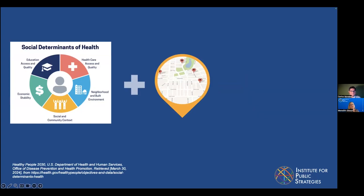I mentioned the social determinants of health — some of you may be familiar with this infographic. These are the conditions in the environment that affect our health and even our life expectancy. We can count things like access to parks or access to healthy nutritional choices as part of the social determinants of health.